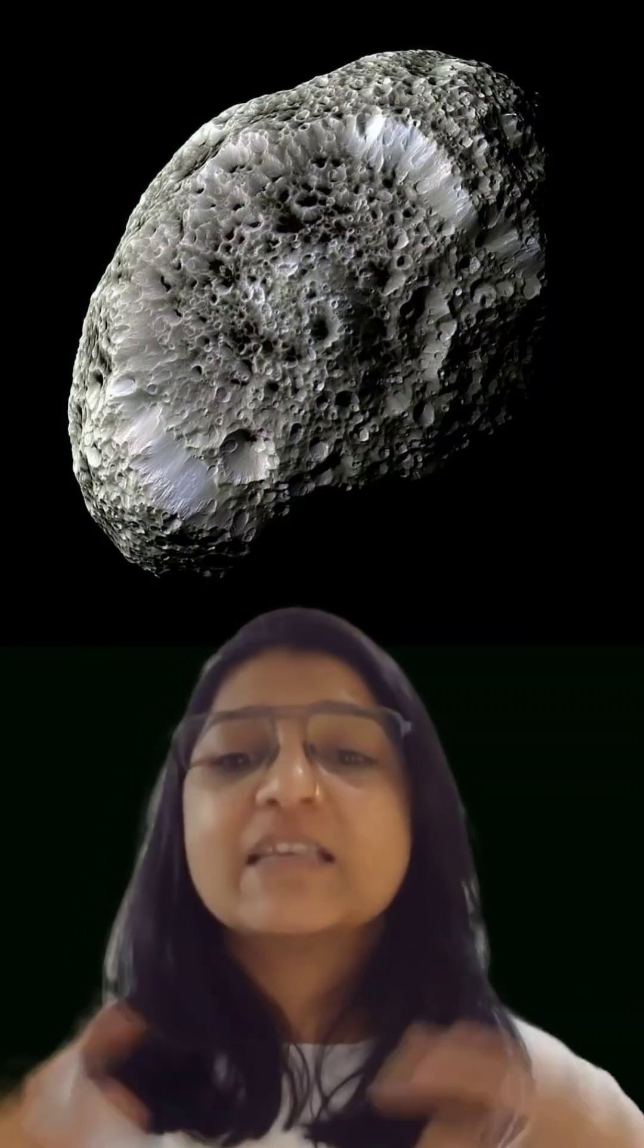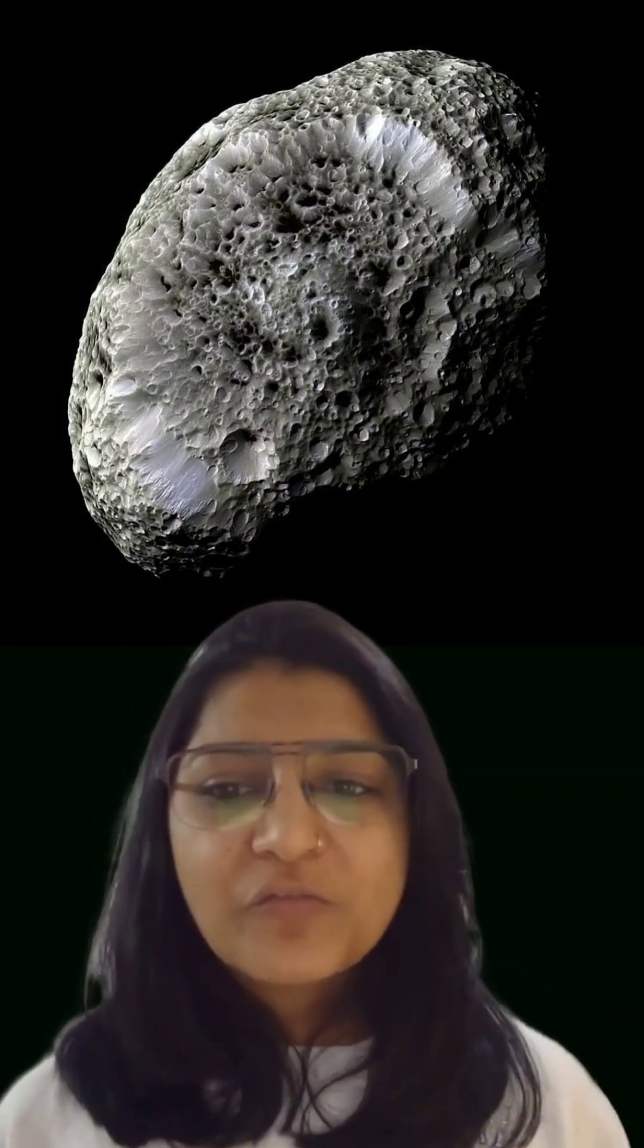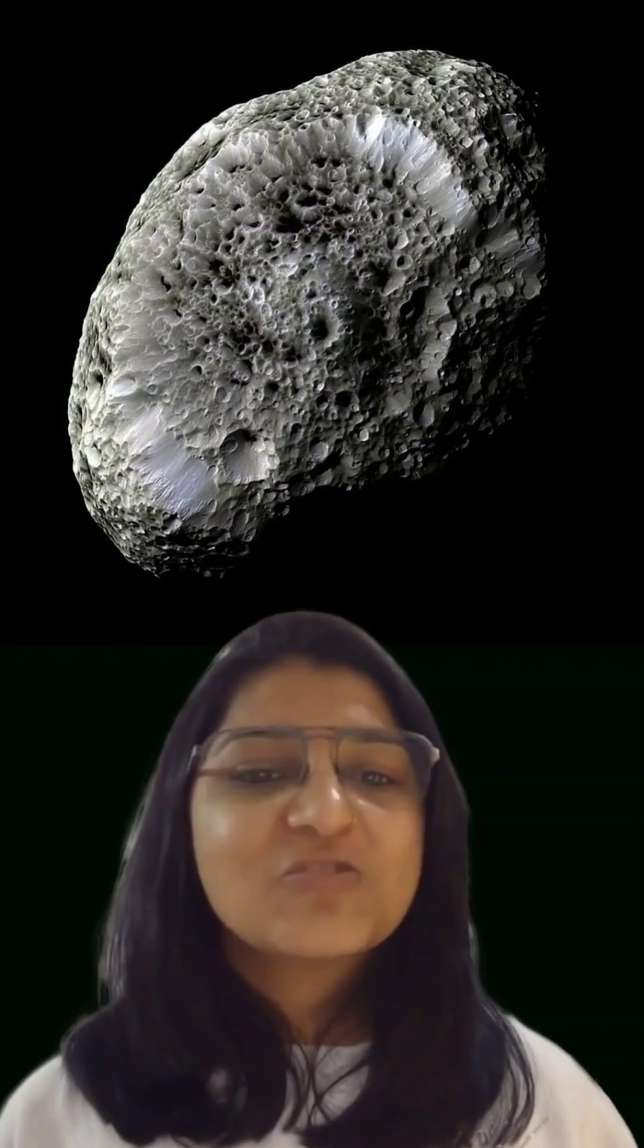It looks like a space sponge or a coral reef, but it's huge—about 401 kilometers long. And check this out: its surface is porous. Scientists say around 40% of it is empty space. That's like a giant celestial sponge just floating out there.